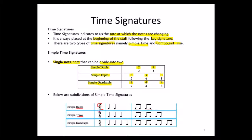We are also looking at simple triple time. Triple, as I said, means three, so it will be three beats of crotchets — one, two, three — which can be subdivided into three groups of two quavers each.